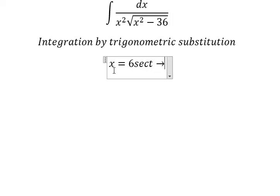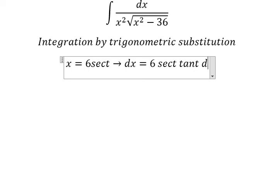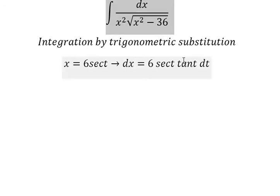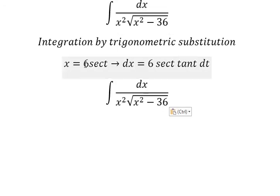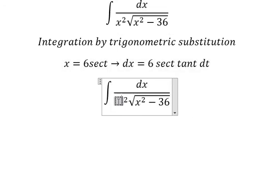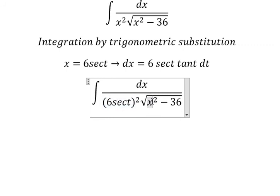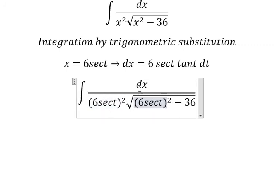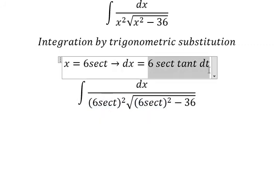Next, we need to differentiate both sides and we have 6 secant t tan t dt. So I need to put this one in here, and here dx we change by this one.